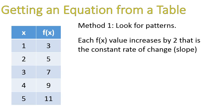First of all, do you see any patterns? Look for patterns among those numbers. Each function of x value increases by 2. It goes 3, 5, 7, 9, 11. That means it's a constant rate of change. That's your slope. That's going to be our slope. That might have been one thing you picked out.